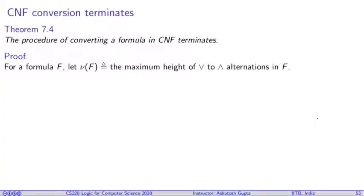The theorem says the procedure of converting a formula in CNF always terminates. How do we do it? For a given formula F, we can assign a measure, how complex this formula is with respect to CNF, how far it is away from being CNF. The measure is how many times AND and OR have been alternating in this formula. That is the measure, or we can call it height of that formula, and we give the symbol nu.